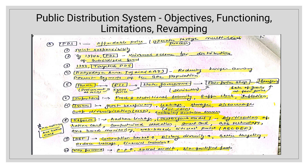Issues of PDS include: ghost beneficiaries — beneficiaries who don't exist but still receive benefits; identification of beneficiary problems; leakage — CACP has reported that 40% of PDS food grains are leaked to the open market; storage issues; and that PDS discourages crop diversification by being cereal-centric. There are also exclusion and inclusion errors — genuine beneficiaries are excluded while ghost beneficiaries are included.